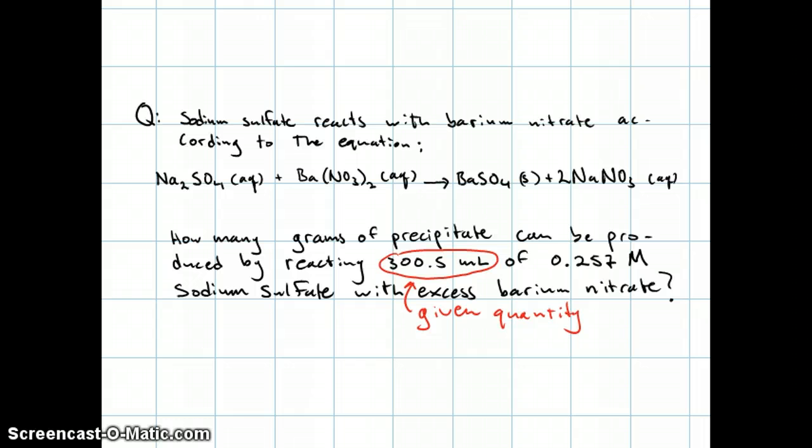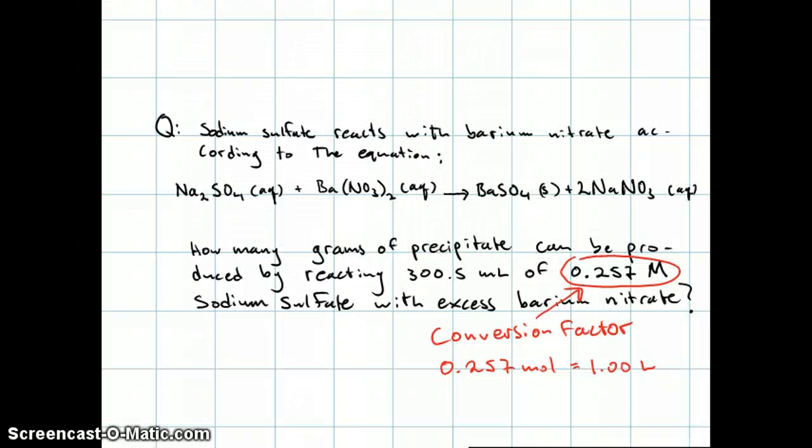Our given quantity is 300.5 milliliters. And our conversion factor is 0.257 molar, which means that there are 0.257 moles of sodium sulfate in 1 liter of solution.